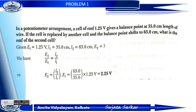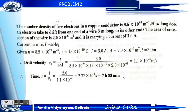Given: E1 equals 1.25 volt, L1 equals 35 cm, and L2 equals 63 cm. Putting all values into E2 equals L2 by L1 into E1, we get E2 equals 2.25 volt.